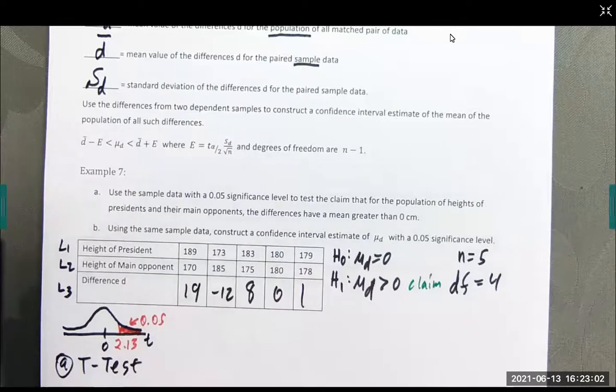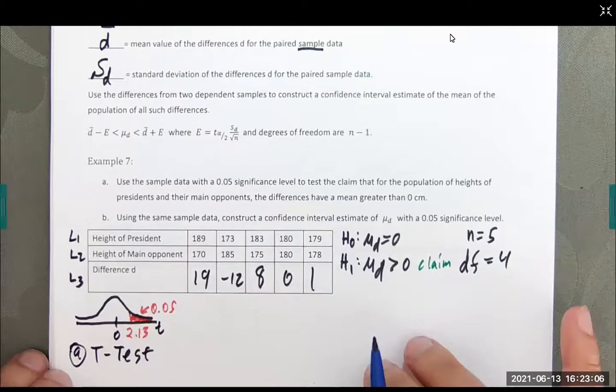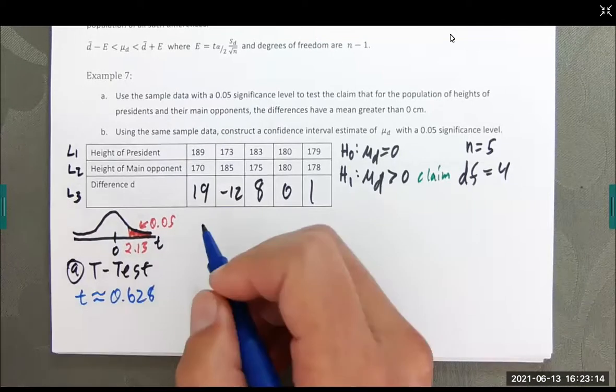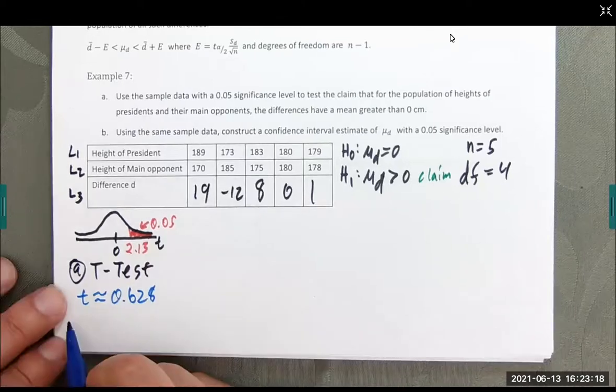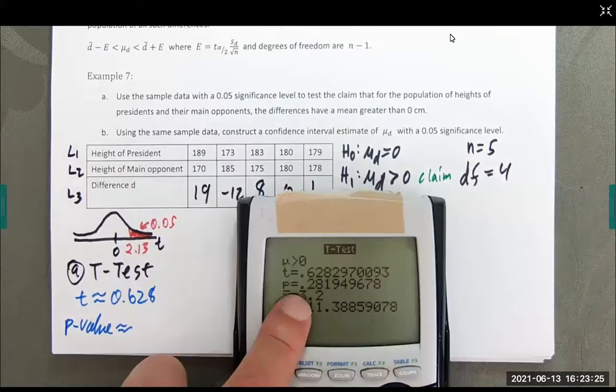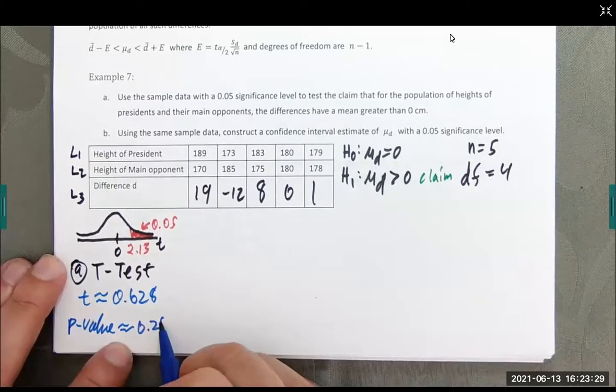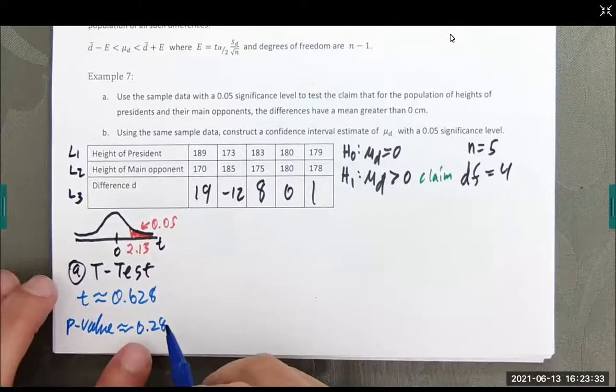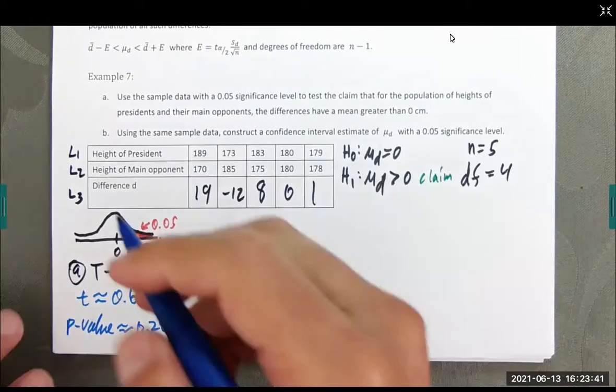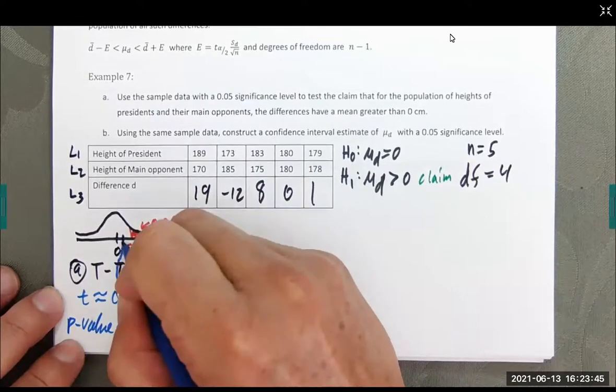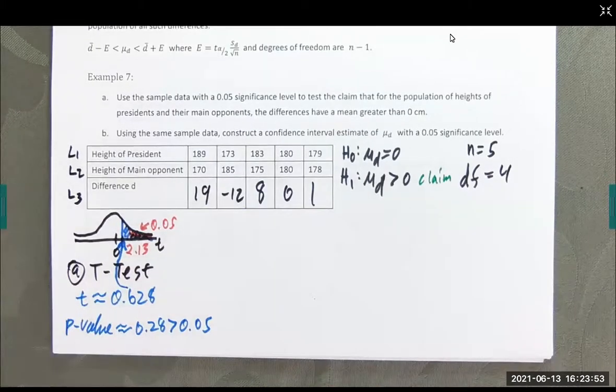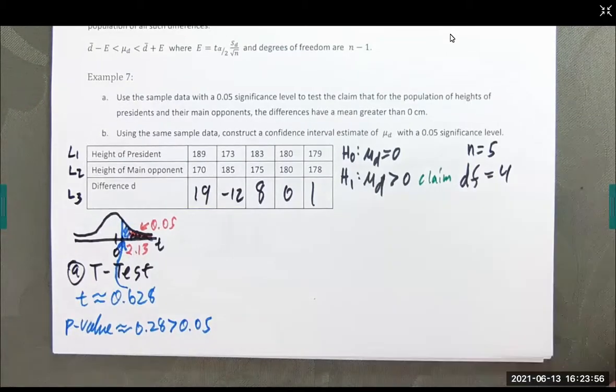This gives me that T is about 0.628. And the p-value is 0.28. Which is way bigger than 0.05. So, my t-value I'm going to put about there. We can see if the p-value is significantly larger than the alpha. So, we're going to fail to reject. And I'll write the fail to reject in the statement after this is part A or B.